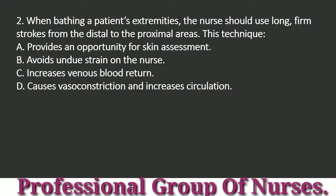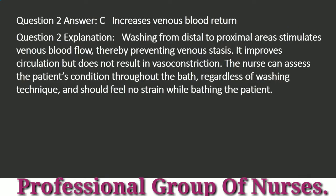Question 2: When bathing a patient's extremities, the nurse should use long, firm strokes from the distal to the proximal areas. This technique: a. Provides an opportunity for skin assessment. b. Avoids undue strain on the nurse. c. Increases venous blood return. d. Causes vasoconstriction and increases circulation. Answer: c. Increases venous blood return. Explanation: Washing from distal to proximal areas stimulates venous blood flow, thereby preventing venous stasis. It improves circulation but does not result in vasoconstriction. The nurse can assess the patient's condition throughout the bath regardless of washing technique and should feel no strain while bathing the patient.